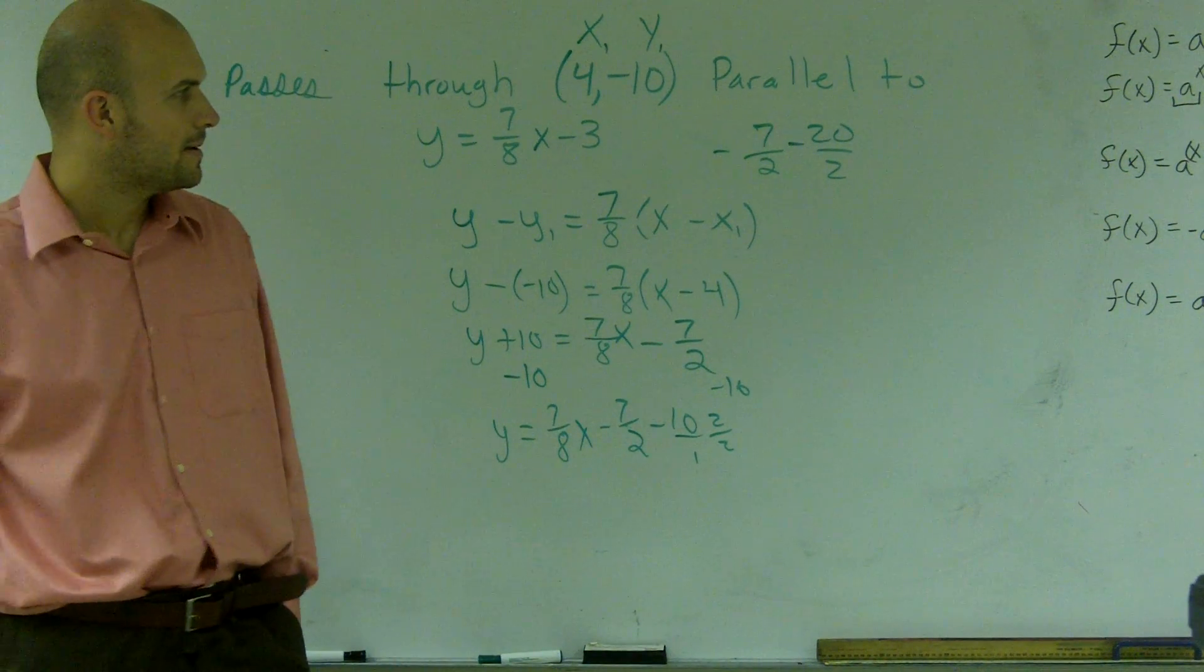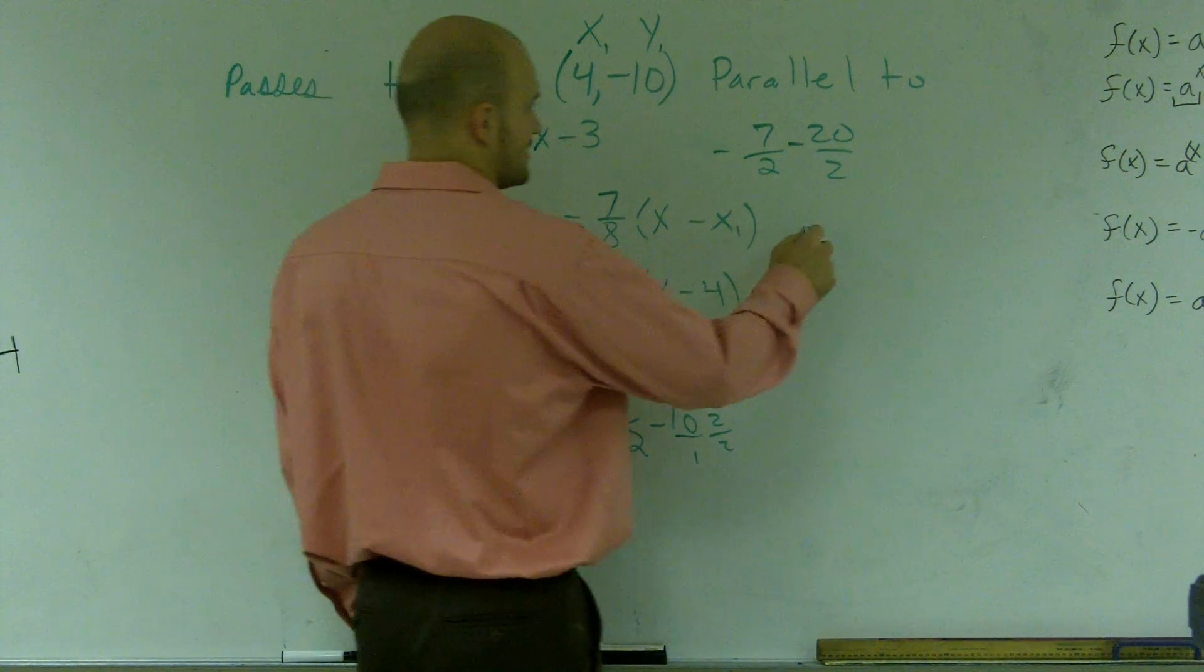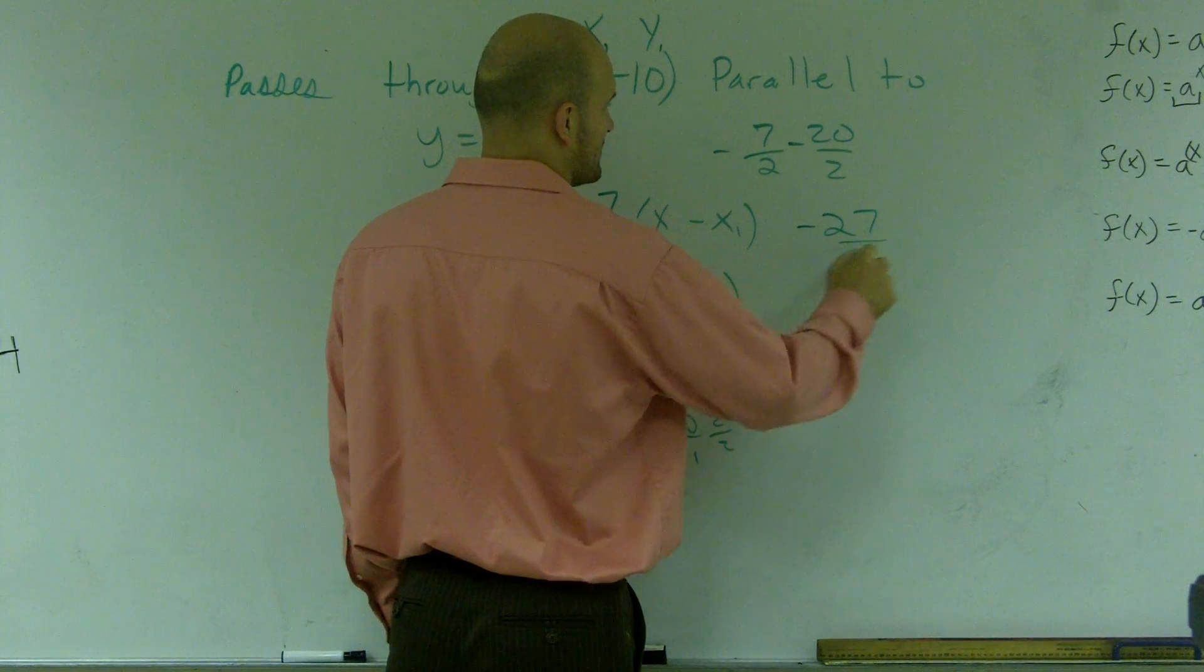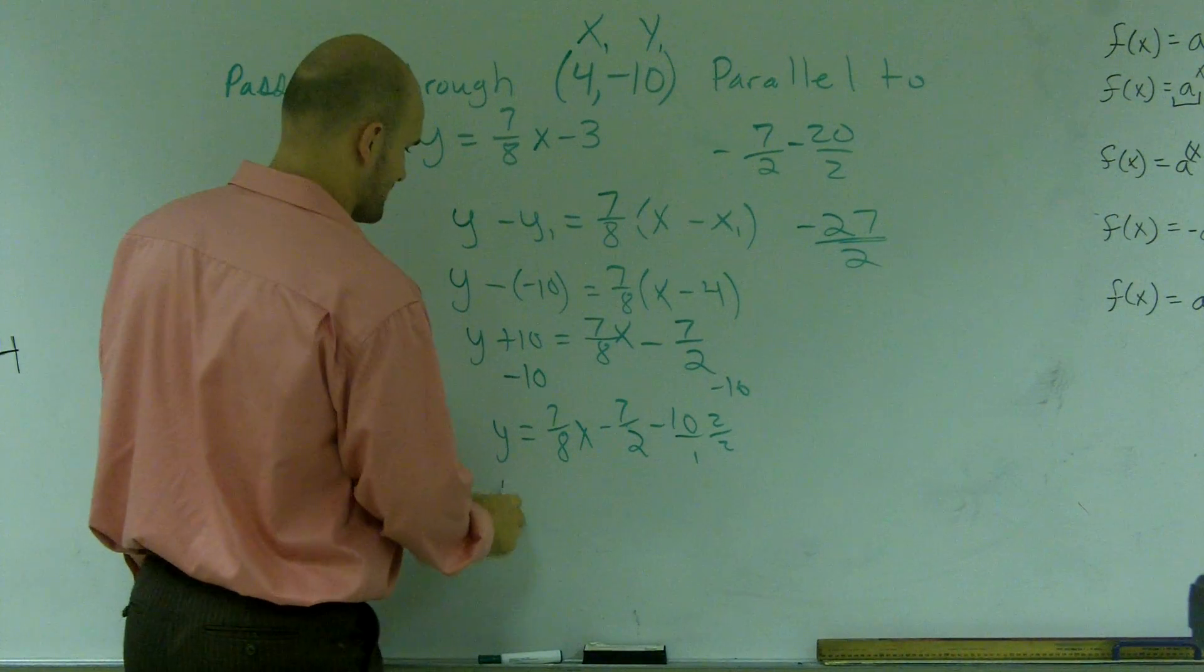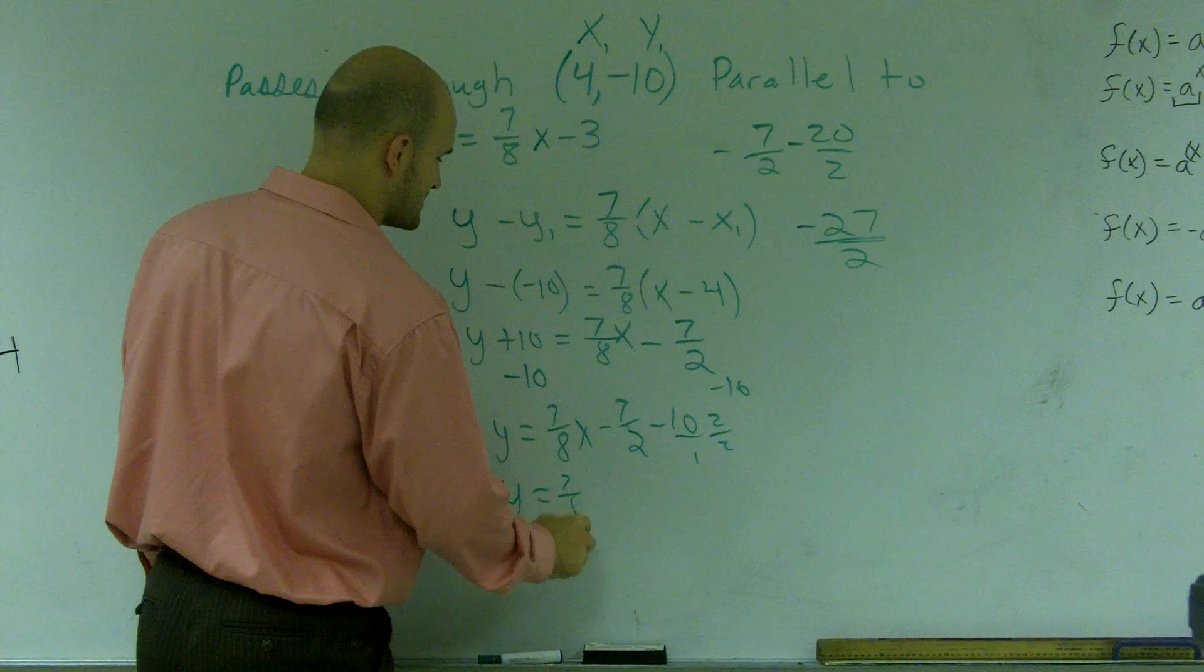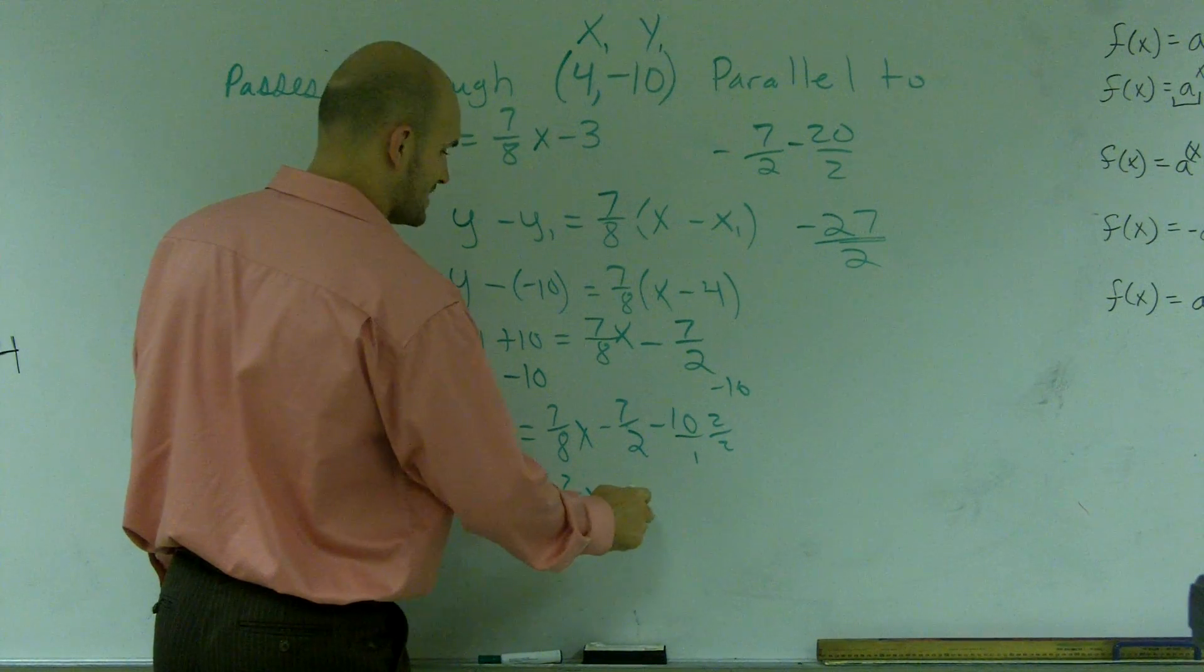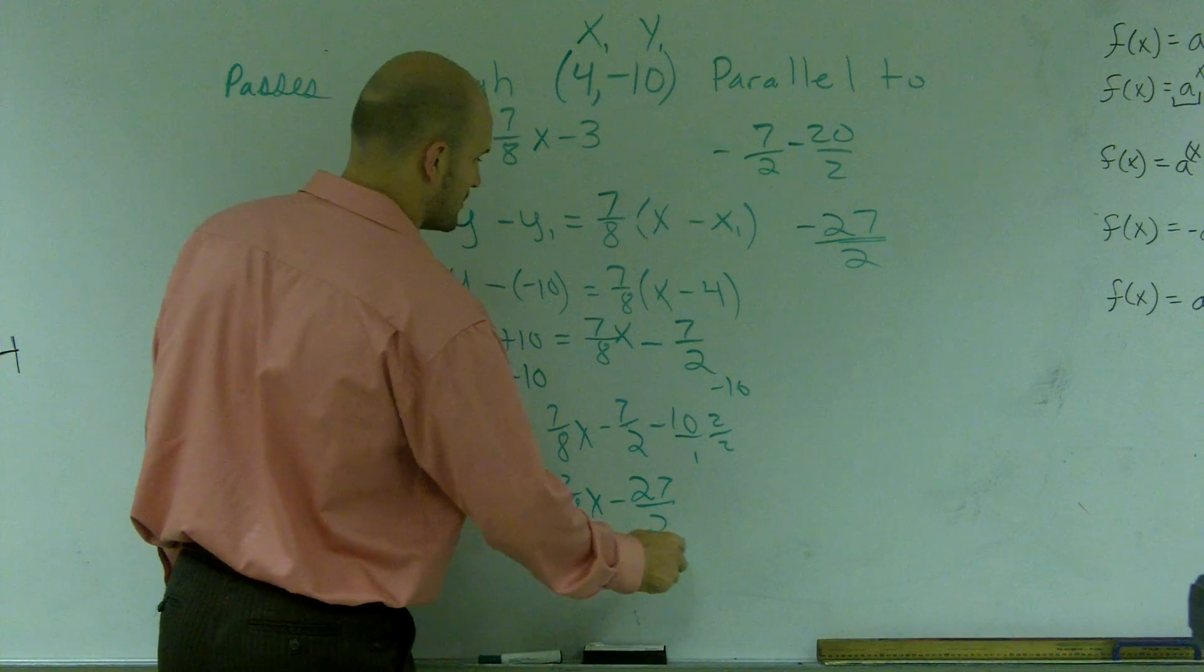So therefore I'll have negative 7 minus 20, which will give me negative 27 over 2. So my final equation: y equals 7/8x minus 27/2.